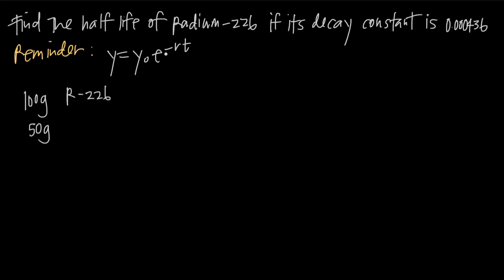We're going to use this formula, and the most important thing is knowing what the variables stand for. t is time. r is our decay constant, and since we've already been given it, we can just plug it in. Sometimes we'll be given the initial amount, the final amount, and time, and asked to find the decay constant — it doesn't matter what values you're given, as long as you have three of the four. y sub-zero is always the initial amount of the substance, and y is the amount of substance you'll have at the end of the decay process.